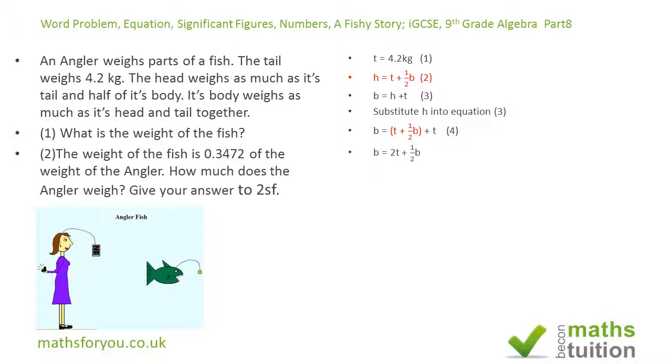If we open up our brackets we have that 2t plus half b equals b. If we subtract half b from both sides, we have that half b equals 2t, which means that b equals 4t because we multiply both sides by 2.